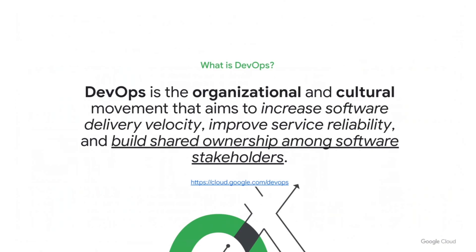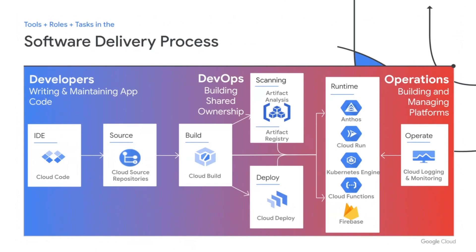This is where DevOps comes into the picture. DevOps is the organizational and cultural movement — meaning it affects how your roles relate to the ownership of tasks that need doing — that aims to increase software delivery velocity, improve service reliability, and most importantly, to build shared ownership among software stakeholders. So you might not have known it, but what you've just asked is a DevOps question.